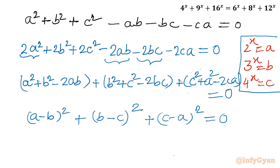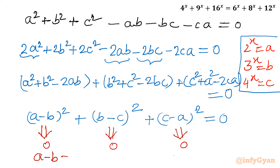So the sum of three squares equals zero. This is possible if and only if each individual bracket is zero. Therefore: a − b = 0, b − c = 0, and c − a = 0.